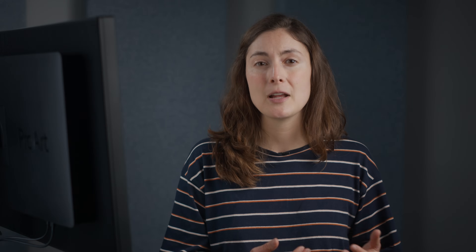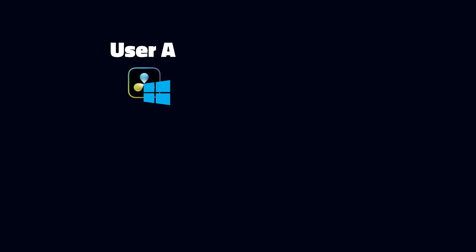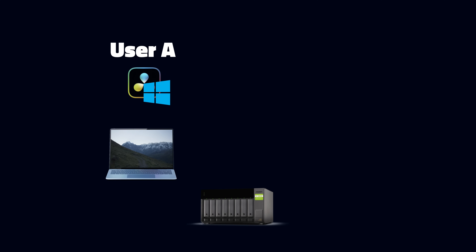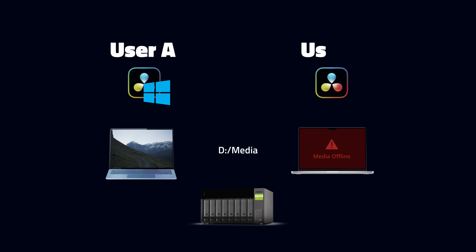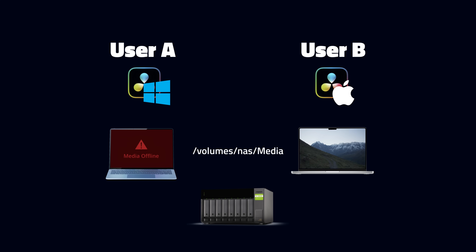Our first scenario involves using Blackmagic Cloud to host your project, but not to sync media. Each user that accesses the project will often have a different file path to their media, even if those different users are just you accessing the project from different computers. For example, user A works on a Windows machine accessing media from a network share with the file path D:\media, while user B on a Mac accesses the same share at /volumes/NAS/media. User B sees the media is offline, relinks it, which makes the media go offline for user A, and they both get into a vicious cycle trying to relink the media.